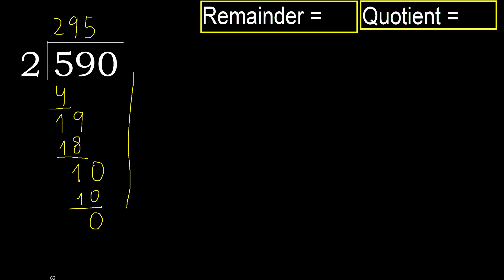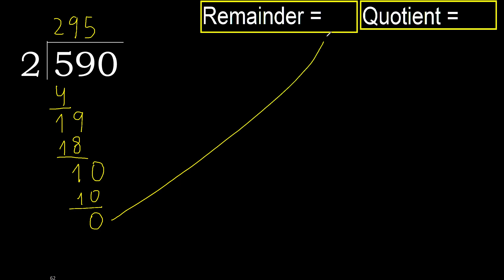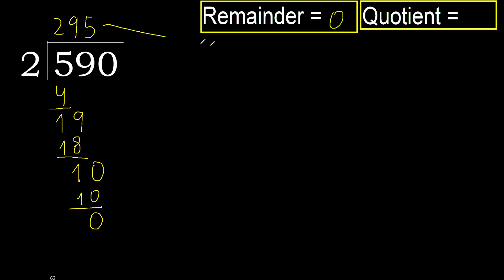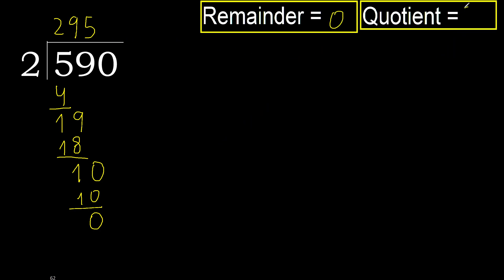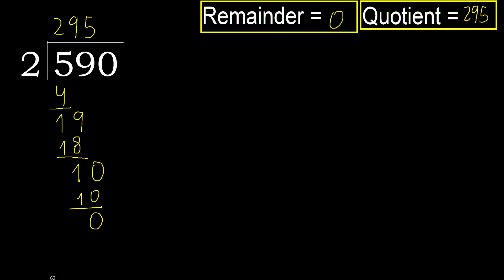There is no next number, therefore finish it. 590 divided by 2 is here.